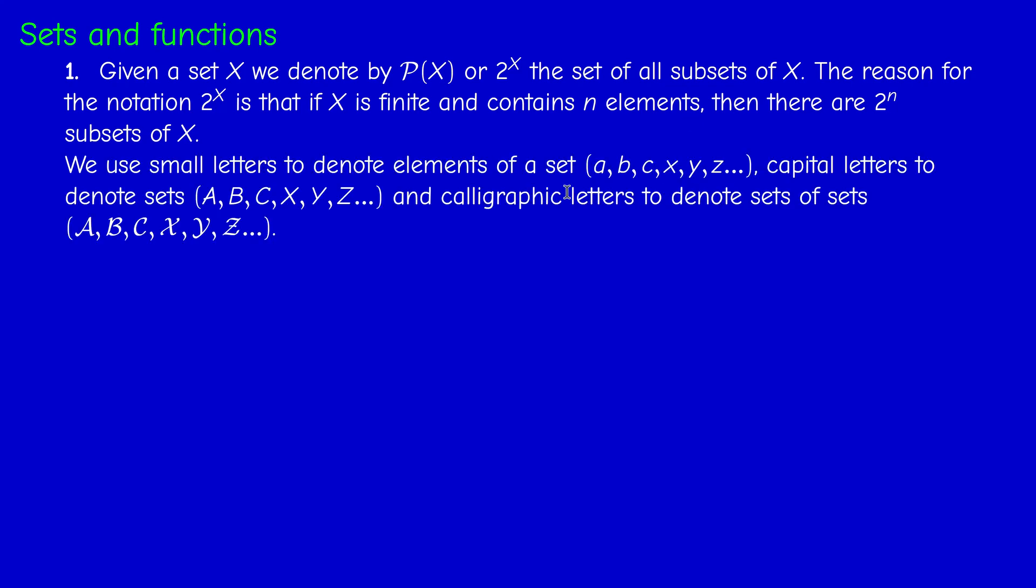In order to make things more clear, we shall use small letters to denote the elements of a set like a, b, c, x, y, z, and we will use capital letters to denote sets, capital A, capital B, and so on, and calligraphic letters to denote collections of sets. There's a kind of hierarchy. This is not strictly speaking necessary, but it may help us distinguish between sets and elements and sets of sets.